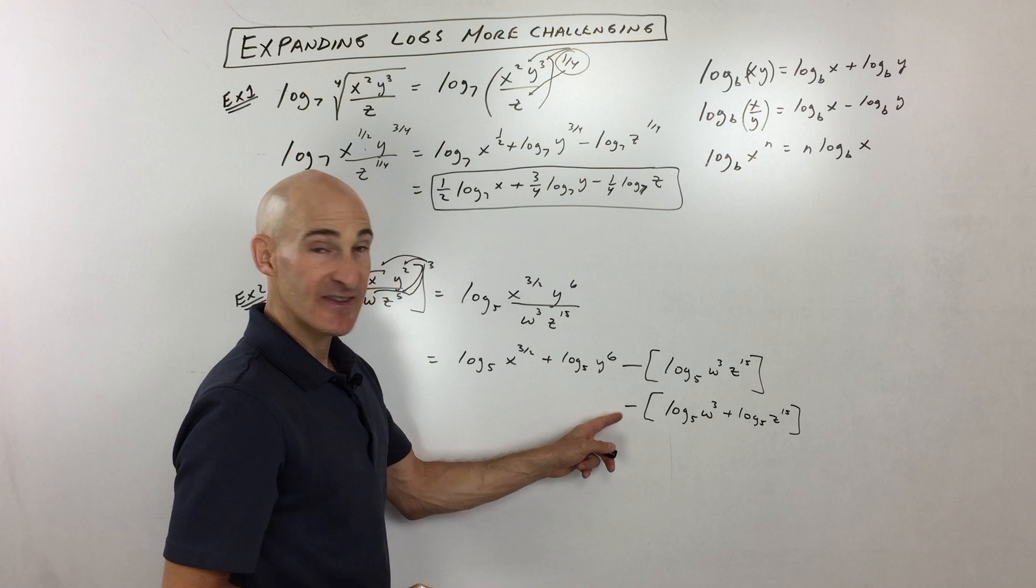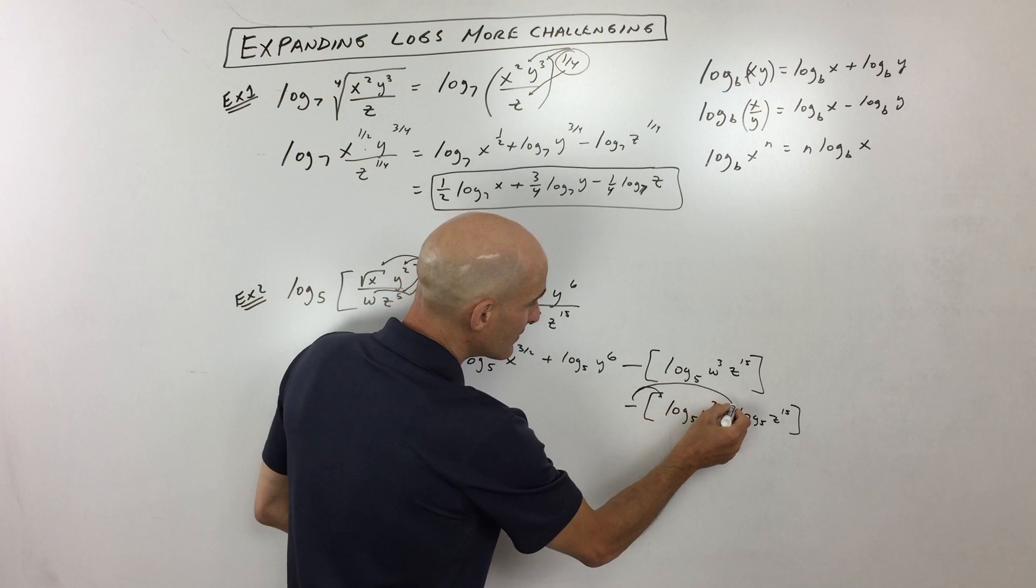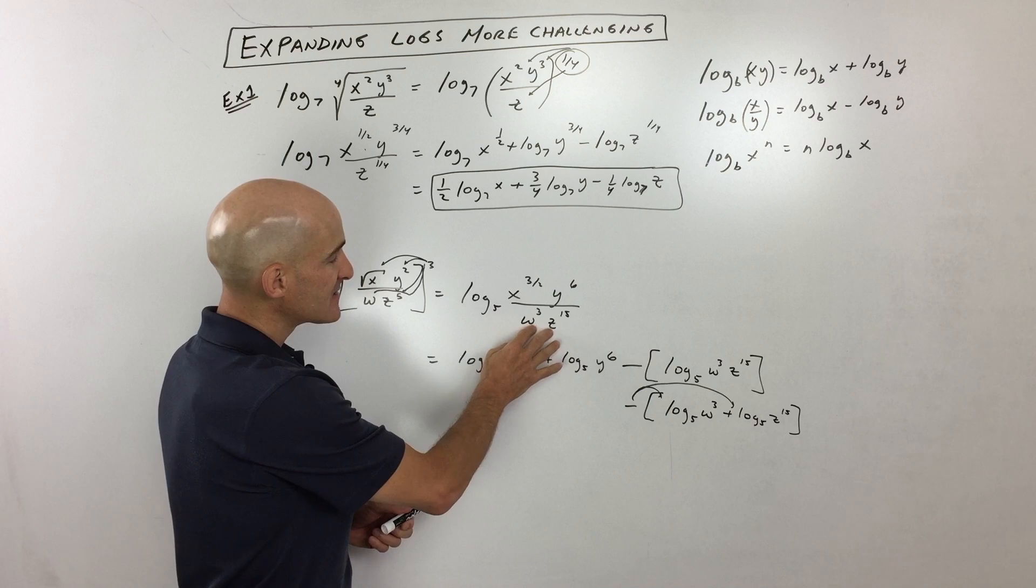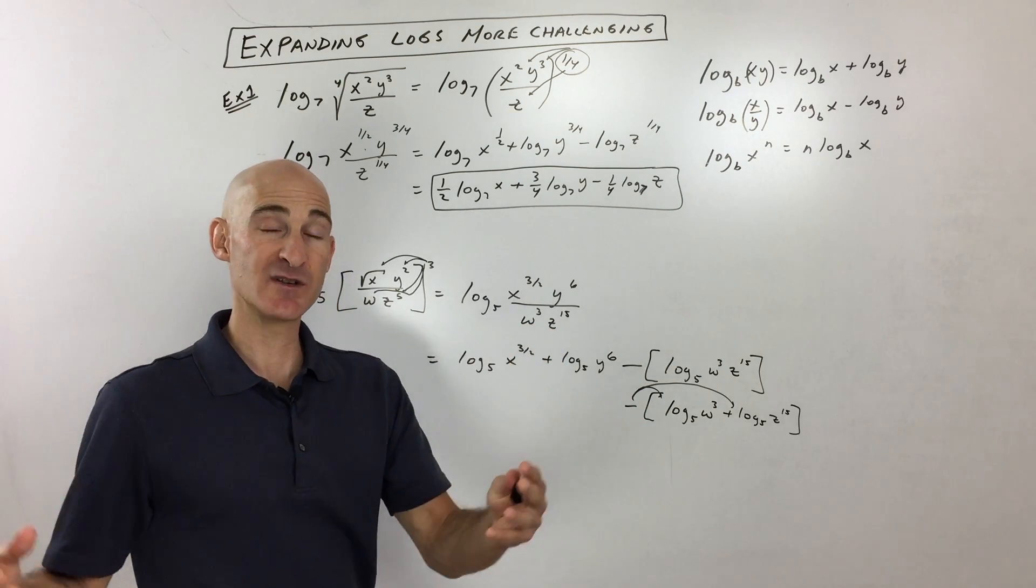But notice see how this minus is on the outside of the parentheses. What we can do is we can then distribute that negative into the parentheses like that. Or another way to think of that is anything that's in the denominator, when you go to expand it, that particular log is going to be subtracted.